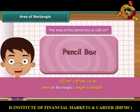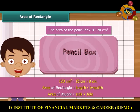Since a square is a rectangle whose length and breadth are equal, the area of a square is obtained by multiplying its side by its side.